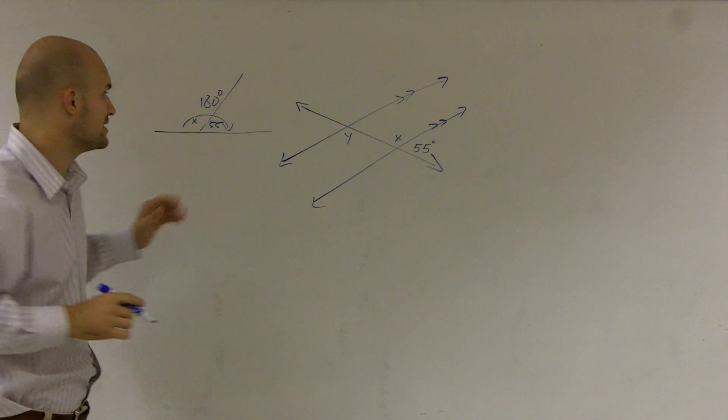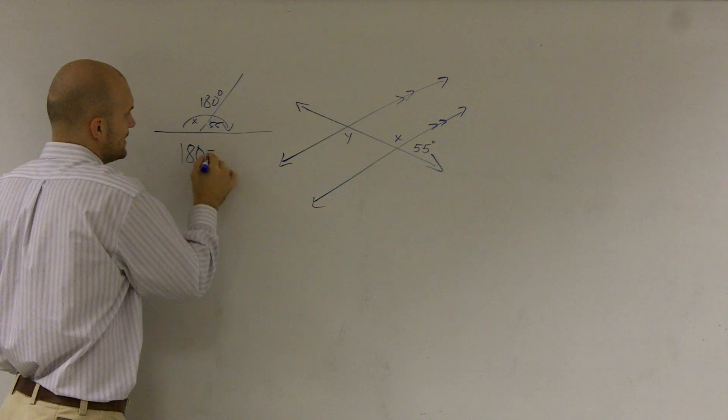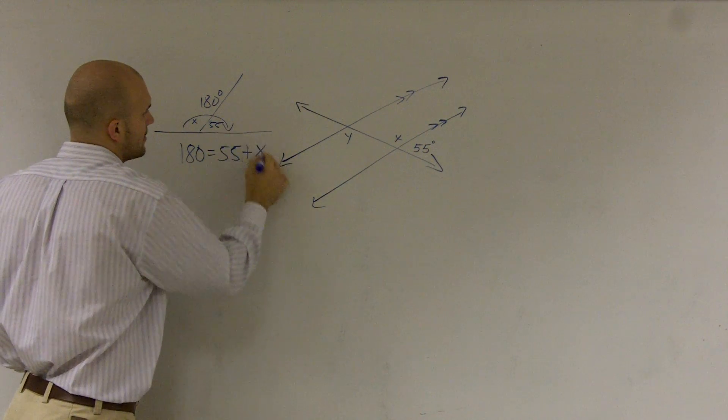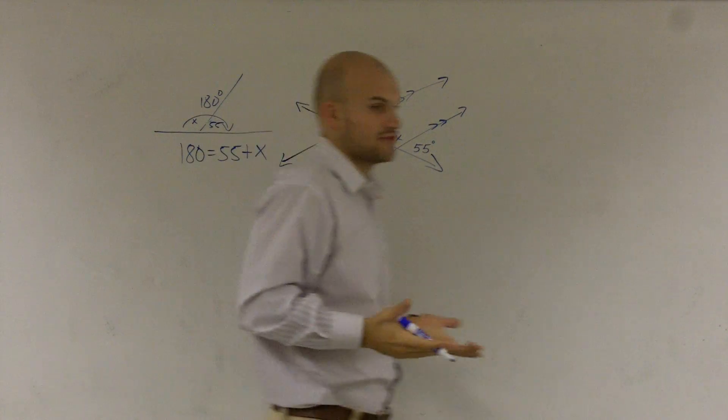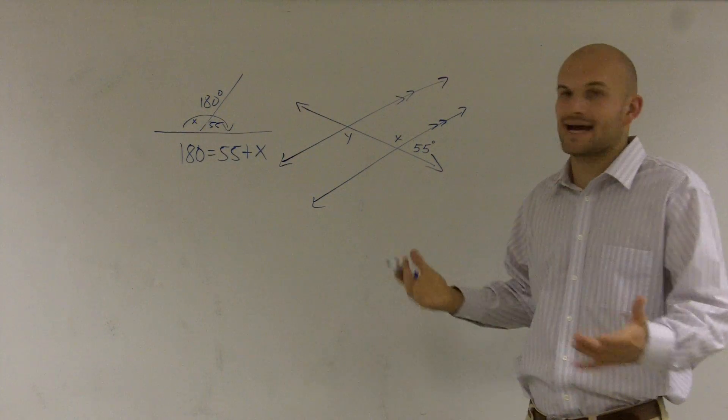Well, to solve, what I can do is I can write an equation which says 180 equals 55 plus x. So then I can find the value of x, because these are what I call supplementary angles, because they add up to 180.